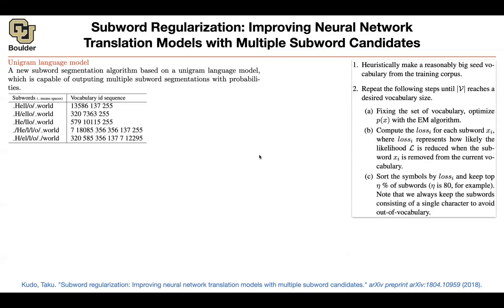How does the tokenization work? Unlike byte pair encoding, which starts with a small vocabulary and enlarges it, this algorithm starts in the reverse order — it starts with a very large vocabulary from your training corpus, obtained by looking at spaces. Then it shrinks that vocabulary, going the other way around compared to BPE, repeating steps until the vocabulary reaches your desired size.